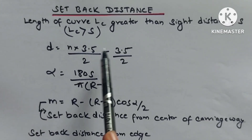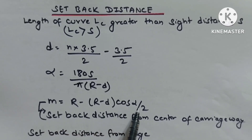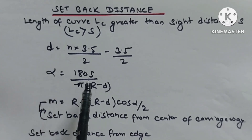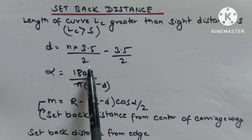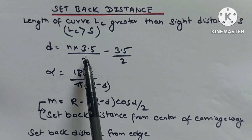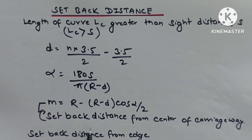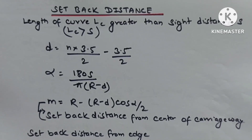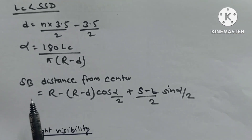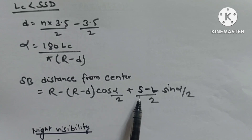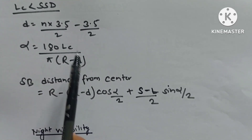Setback distance: When curve length Lc > sight distance S, M = R − (R − d)·cos(α/2), where α = 180S/(πR − d) and d = n × 3.5/2 − 3.5/2, n being number of lanes and 3.5 m being single-lane width. When Lc < SSD, M = R − (R − d)·cos(α/2) + (S − Lc/2)·sin(α/2), where α = 180Lc/(π(R − d)).